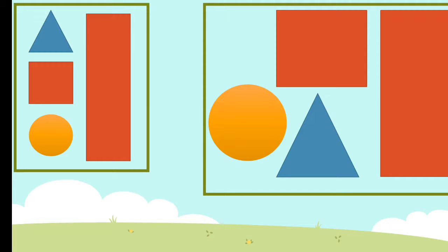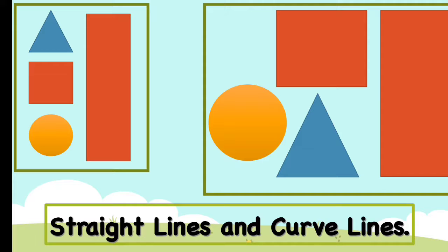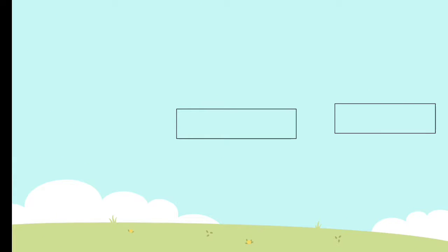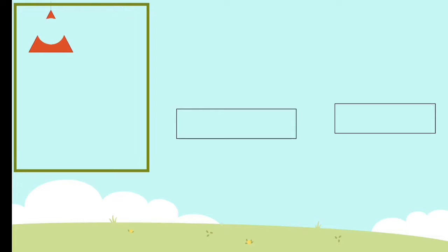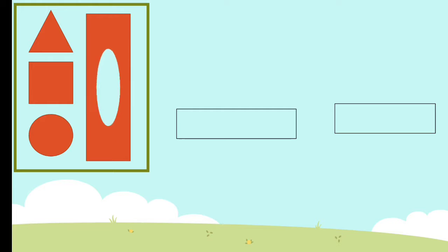Now look at these shapes carefully. These shapes are made up of curved lines and straight lines. They are made up of straight lines and curved lines. So what are these straight lines and what are these curved lines? Look at a triangle, a square, a circle, and a rectangle, and you will know which shape is formed by a straight line and which shape is formed by a curved line.